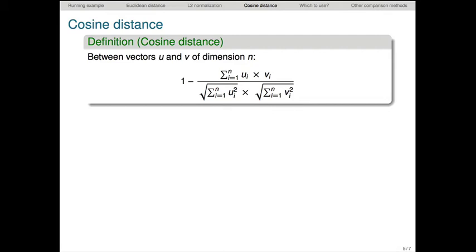Cosine distance incorporates the normalization step directly into the distance calculation. Here's the definition. The values in the denominator are the normalizing quantities we used for L2 normalization. The numerator is the dot product of the two vectors. And this quotient gives us the cosine similarity value here. We then just subtract this value from 1 to get a rough distance calculation. A bit more fiddling is actually needed to make this a true distance metric, but we can set that aside for present purposes.